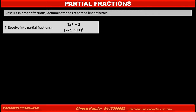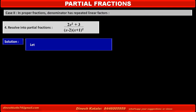Problem 4: Resolve into partial fractions (2x² + 3) / [(x - 2)(x + 1)²]. In the denominator, one factor is (x - 2), which is a linear single factor, and the other factor is (x + 1)², which is a repeated linear factor.